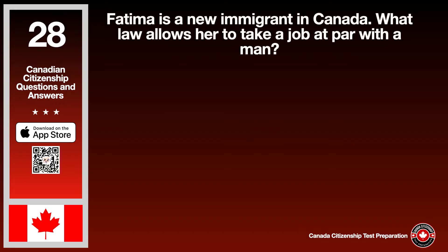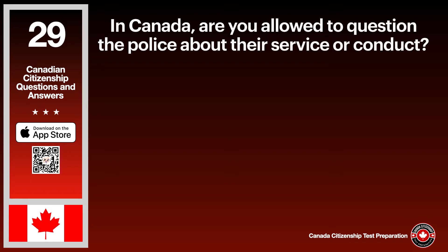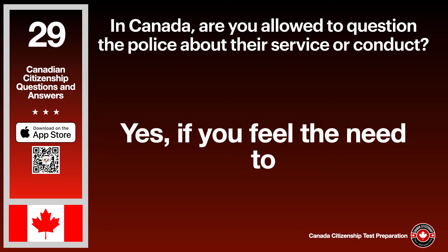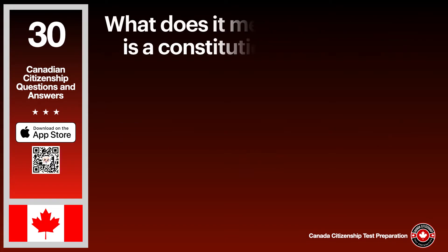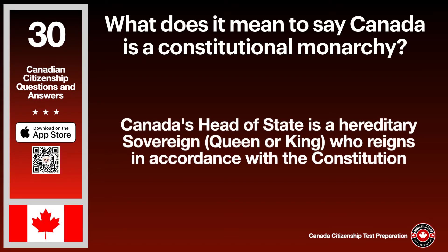Fatima is a new immigrant in Canada. What law allows her to take a job at par with a man? The answer is equality of women and men. In Canada, are you allowed to question the police about their service or conduct? The answer is yes, if you feel the need to. What does it mean to say Canada is a constitutional monarchy? The answer is Canada's head of state is a hereditary sovereign — queen or king — who reigns in accordance with the constitution.